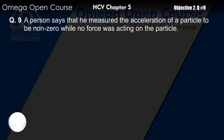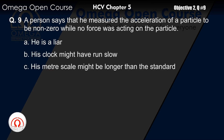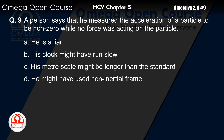A person says that he measured the acceleration of a particle to be non-zero while no force was acting on the particle. A: He is a liar. B: His clock might have run slow. C: His meter scale might be longer than the standard. D: He might have used a non-inertial frame.